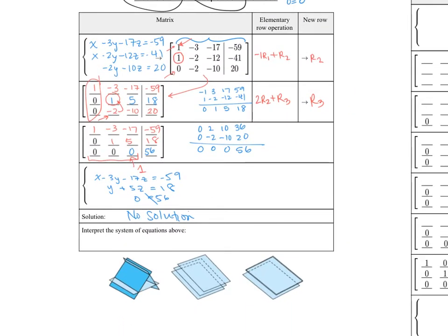To interpret that system of equations, it means that all three planes don't intersect at one point. Graphically, there are a few possibilities: two planes might intersect along a line, but they don't all intersect at the same time with the third plane. Or all three could be parallel. Or two could be identical on top of each other, but the third is parallel to them, so they don't all intersect at the same time.